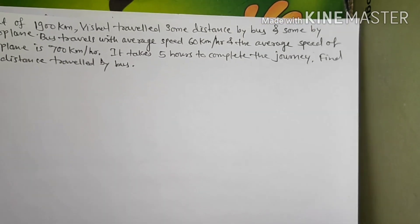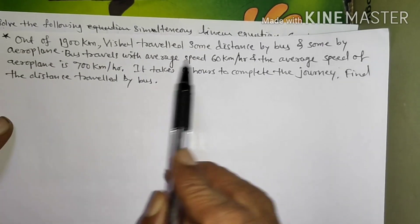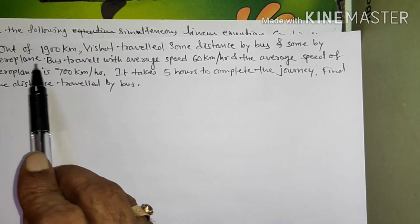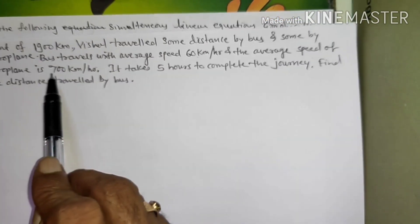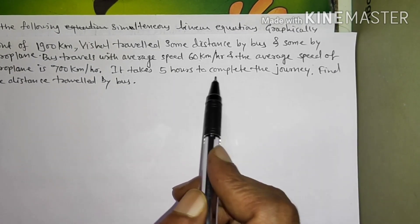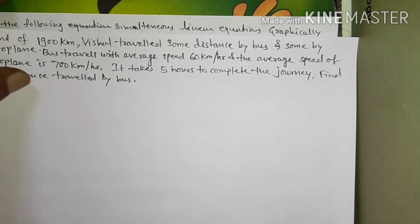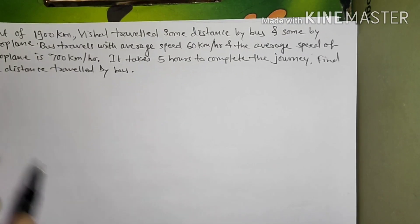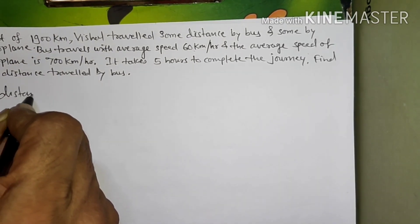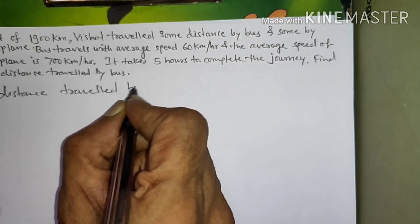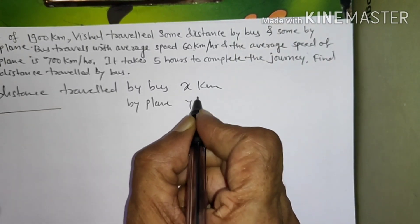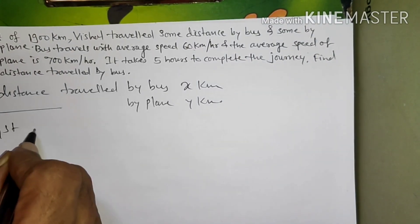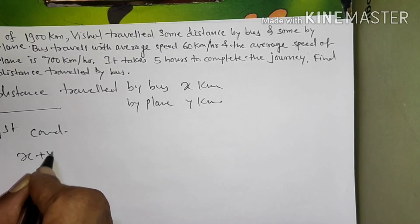Next: out of 1900 km, Vishal traveled some distance by bus and some by aeroplane. The bus travels at an average speed of 60 km per hour, and the aeroplane at 700 km per hour. It takes 5 hours to complete the journey. Find the distance traveled by bus. Let distance traveled by bus be X km and distance traveled by plane be Y km. By the first condition: X plus Y equals 1900.